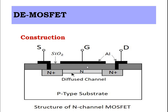Because of the SiO2 oxide layer, there is a capacitance that exists between the gate and channel — the metal gate contact and the channel act as walls of a parallel plate capacitor with SiO2 as the dielectric. Hence, the input impedance of DE MOSFET is very high.